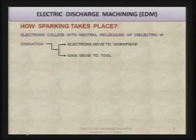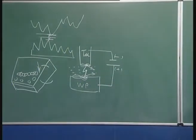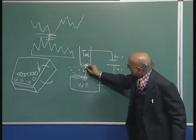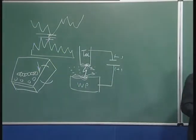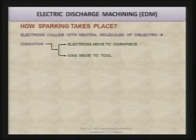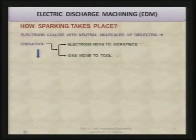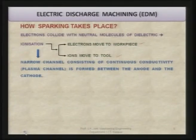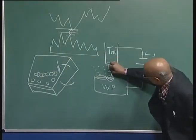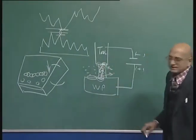Electrons collide with the neutral molecules of the dielectric filling the gap. When electrons detach from the cathode and strike the dielectric molecules, dissociation or ionization of those molecules takes place, leading to ion formation. Electrons then move towards the positively charged work piece and ions move towards the negatively charged tool. A narrow channel of continuous conductivity — a plasma channel — is formed between the anode and the cathode, consisting of ions as well as electrons.